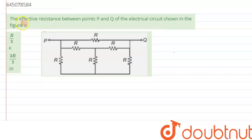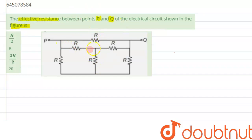We are given a question which says: find the effective resistance between P and Q of the electrical circuit shown in the figure. So we need to calculate the effective resistance between points P and Q. Let's try to analyze the given circuit.